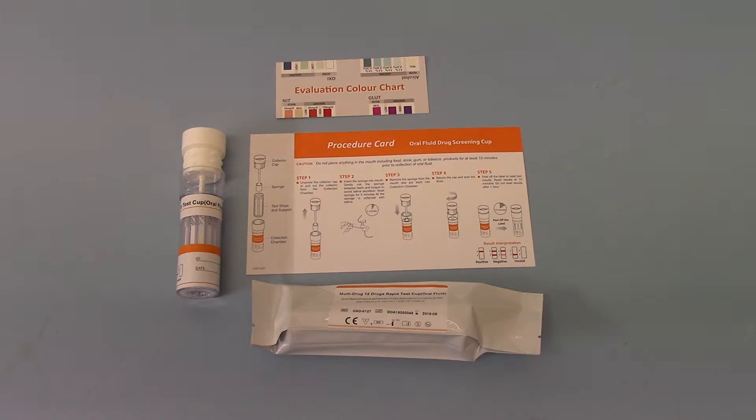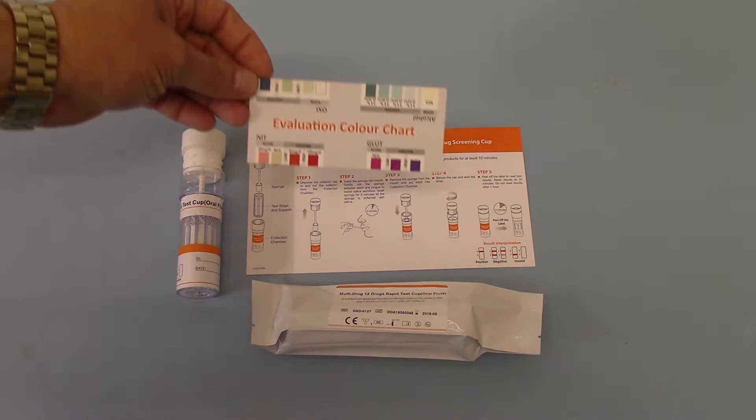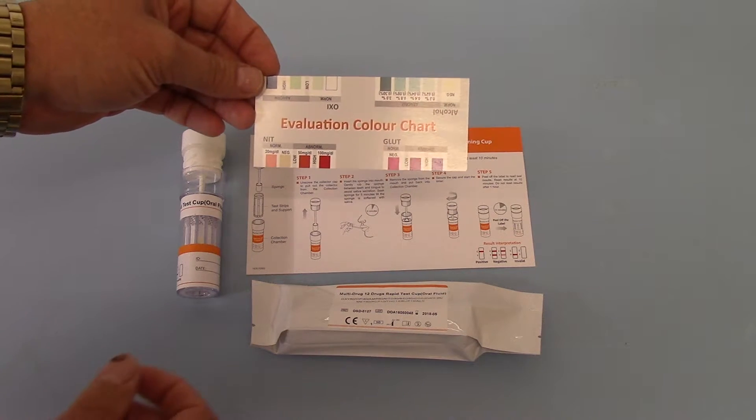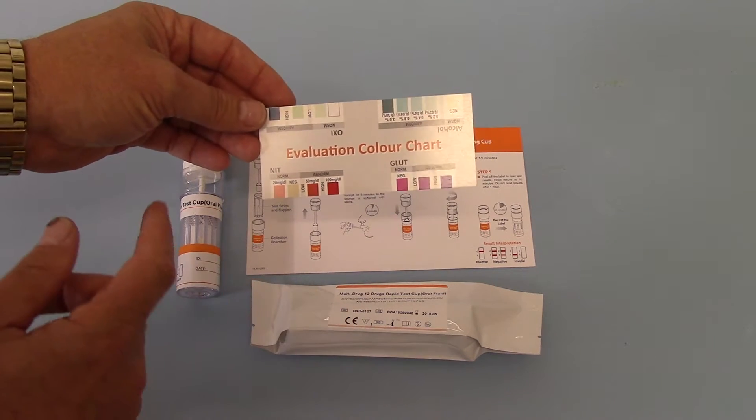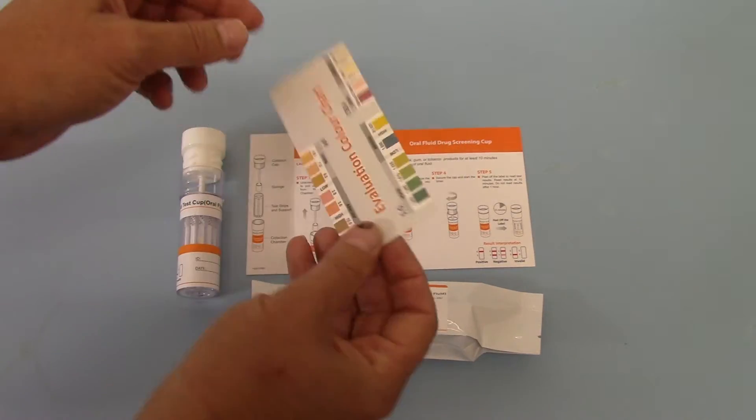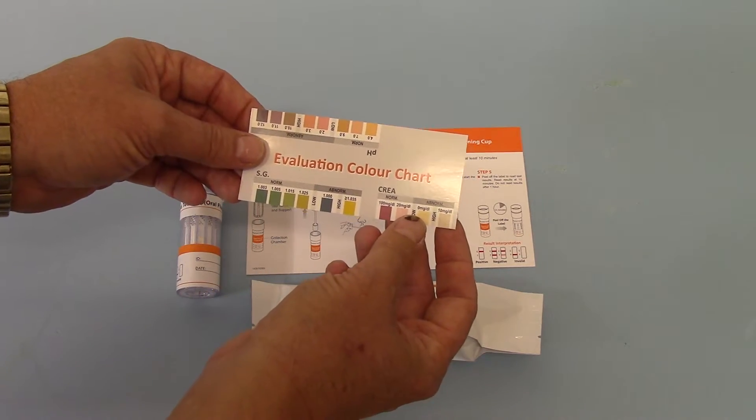The first thing we're going to talk about is the evaluation card which comes with the pack. This is a generic evaluation card which includes tests which aren't included on this in addition to the alcohol test which is. This is a screen for adulteration analysis where an adulteration test is included mainly in urine drug tests.